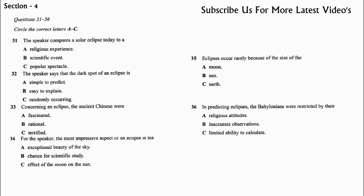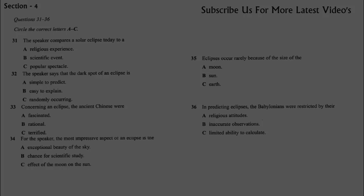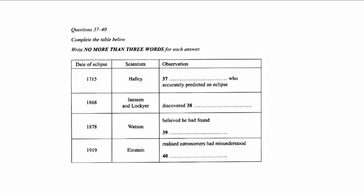In the second part, the speaker talks about a number of scientists. Look at questions 37 to 40. It was Edmund Halley, the English astronomer, who knew his maths well enough to predict the return of the comet, which, incidentally, bears his name, and in 1715, he became the first person to make an accurate eclipse prediction. This brought eclipses firmly into the scientific domain, and they've since allowed a number of important scientific discoveries to be made.